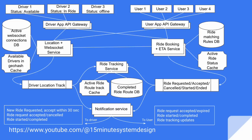Once the ride is completed, the driver sends a ride ended status to the ride booking service, which in turn notifies the ride tracking service and the user that the ride has ended. The ride booking service may also check the wallet service or some other service to confirm if automatic payment deduction has happened, and then confirms to the driver that the ride has finished and they can change their status from in-ride to available again.